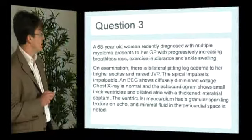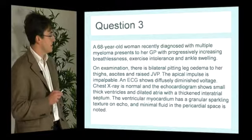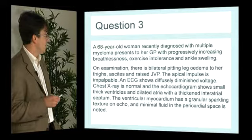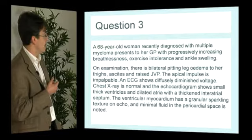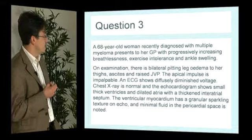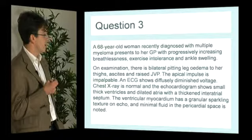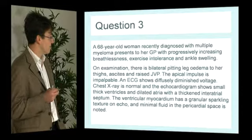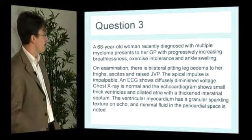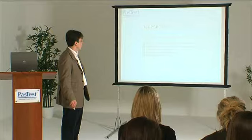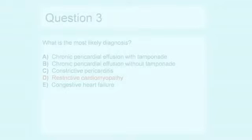Question three: a 68-year-old woman recently diagnosed with multiple myeloma presents with progressively increasing breathlessness, exercise intolerance, and ankle swelling. Examination shows bilateral pitting oedema to the thighs, ascites, and raised JVP. The apical impulse is impalpable. ECG shows diffuse diminished voltage. Chest radiograph is normal. Echocardiogram shows small thick ventricles, dilated atria, thickened interatrial septum, granular sparkly ventricular myocardial texture, and minimal pericardial fluid. What is the most likely diagnosis? The answer is restrictive cardiomyopathy.